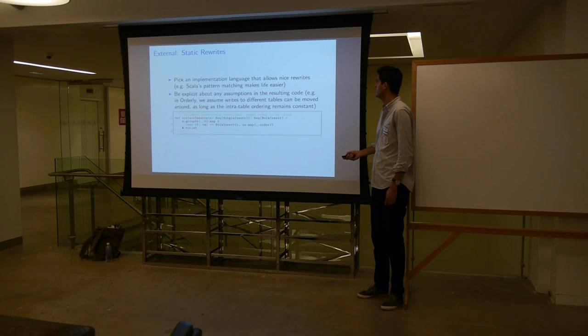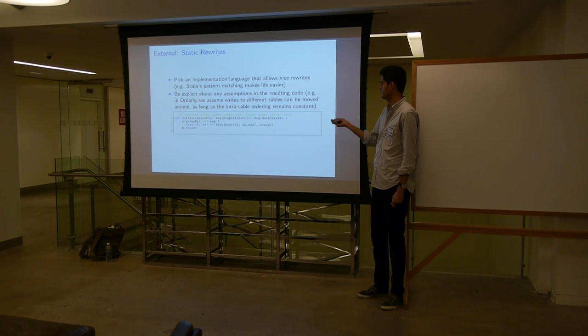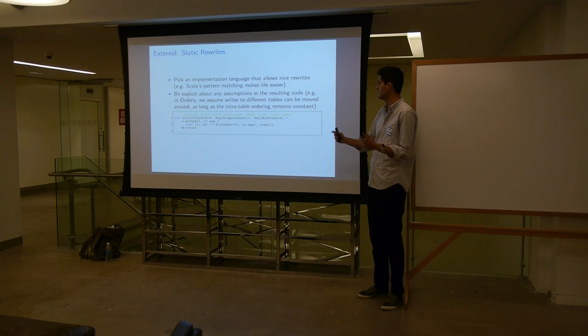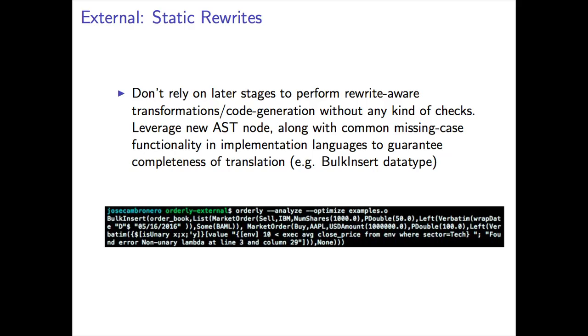We found it very helpful to be very explicit about the assumptions we make in the rewrite code. For Orderly, we have to assume that the writes of different tables can be moved around — we're collecting writes and then putting them all at once. But the writes within a table have to remain constant, and that's noted in the orderly code. We don't rely on later stages to know that we performed a rewrite — we'll force them to know either by creating a new data type or by handing off a specific function.